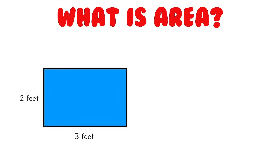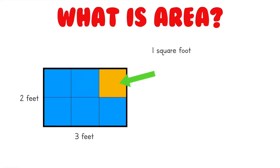Let's take a look at this rectangle right here. This rectangle has a length of 3 feet and a width of 2 feet. To better visualize the amount of space it takes up, let's draw in some lines where all the feet are. Now that we've drawn in lines for every foot, we know that each one of these squares is 1 foot long and 1 foot wide, which is what we call 1 square foot. It can also be written shorter, or as 1 foot squared. All three of these ways are correct.